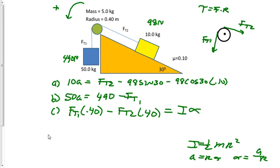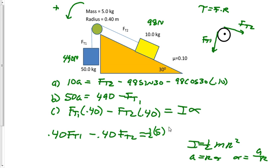So we get: 0.40·T₁ − 0.40·T₂ = ½·m·(0.40)² × (A / 0.40). In our next video, Part 2, we will solve the system of equations to get force tension 1, force tension 2, and the acceleration.